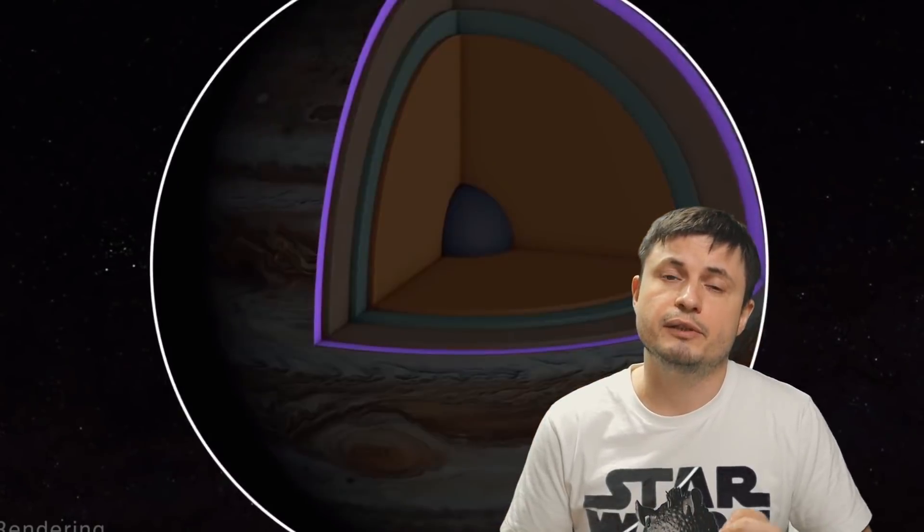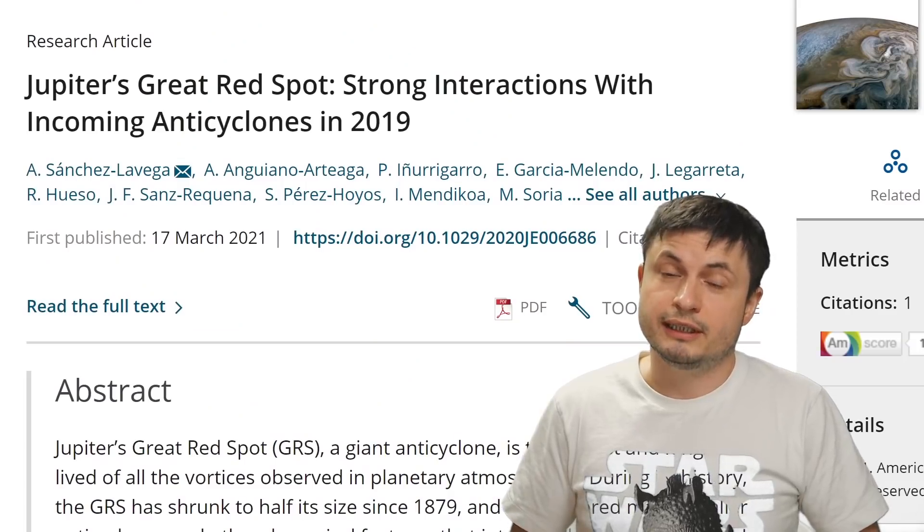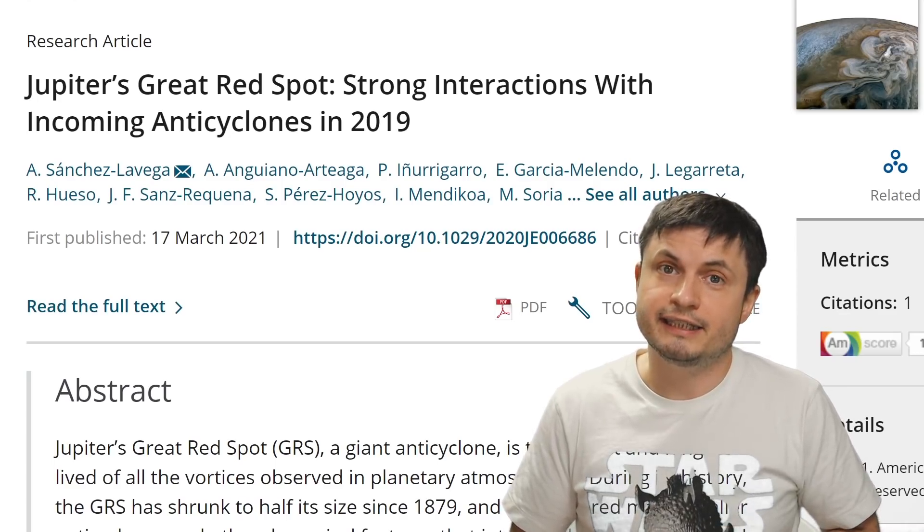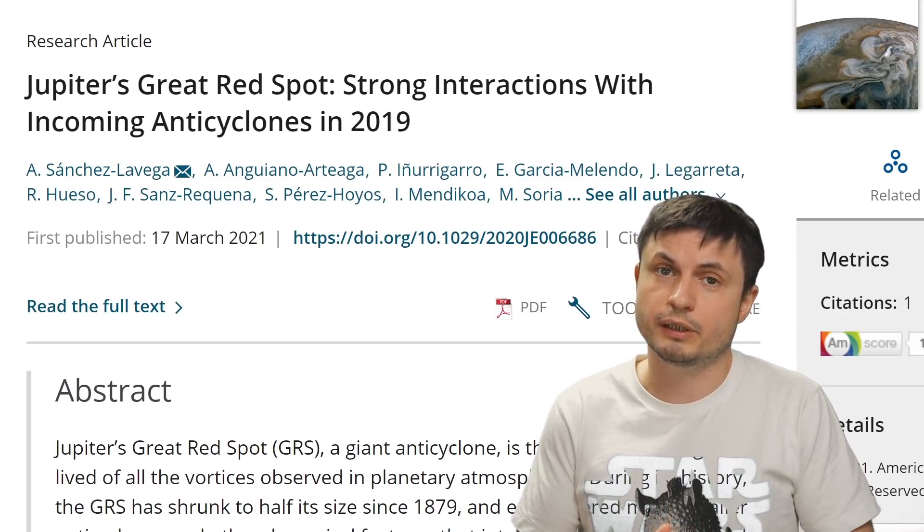But here's the question, is the Fujiwara effect from all of these colliding storms destroying the GRS slowly making it disappear from existence? Or are they actually feeding it, giving it even more strength? And well at least one recent paper that analyzed some of these recent collisions from 2019 makes a pretty strong argument that the great red spot is actually most likely going to grow in size in the next few years. In other words it's not going to be shrinking. And here's the reasoning.